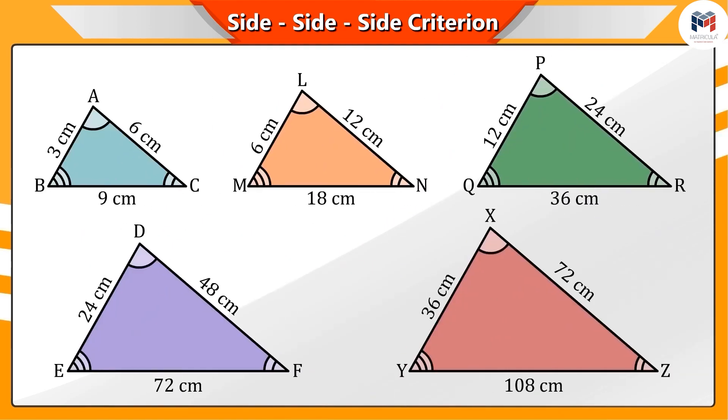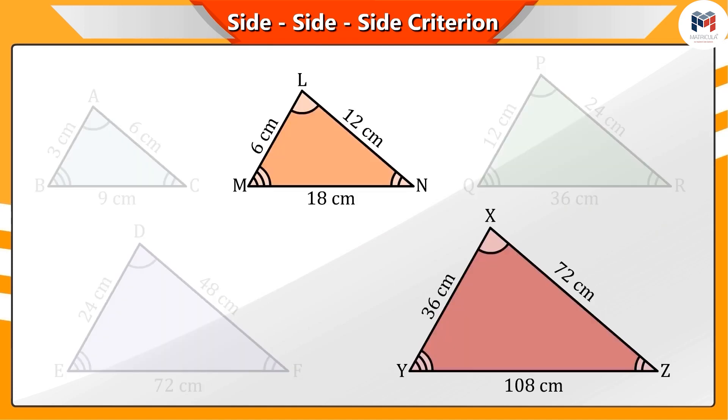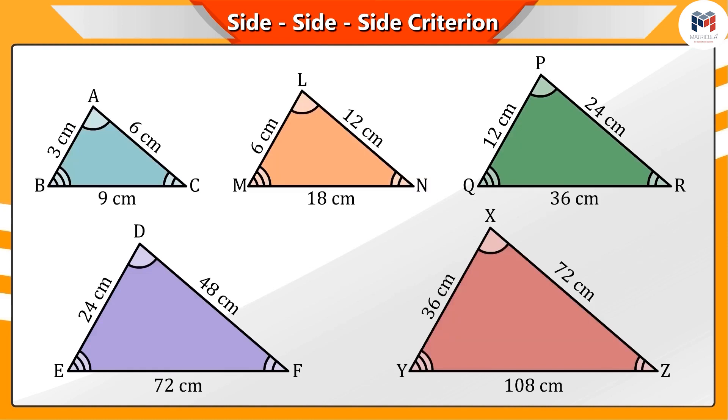Similarly, if we take any two triangles from these, then the ratios of their corresponding sides and the corresponding angles are equal.